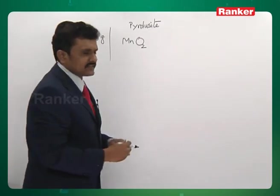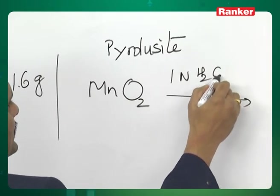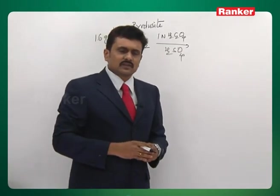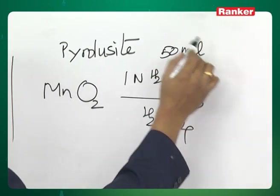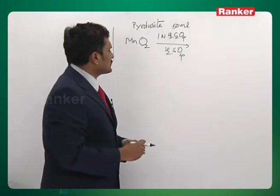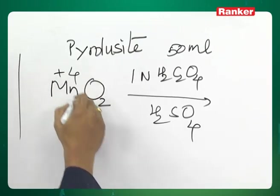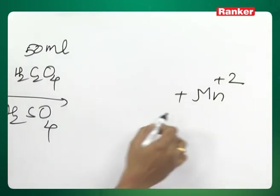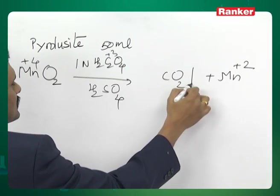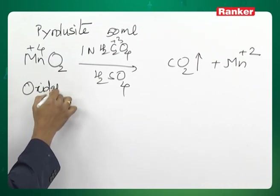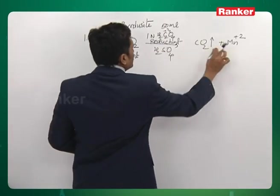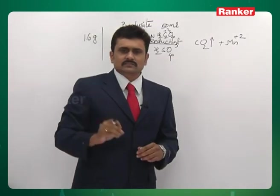We have taken 1.6 gram of MnO₂ which was added to oxalic acid — 1 normal oxalic acid — in the presence of H₂SO₄, which is acting only as the acidic medium. The volume of oxalic acid given is 50 ml. In acidic medium, the oxidation state of manganese changes to +2, and in oxalic acid the oxidation state of carbon changes from +3 to +4, forming carbon dioxide and Mn²⁺.